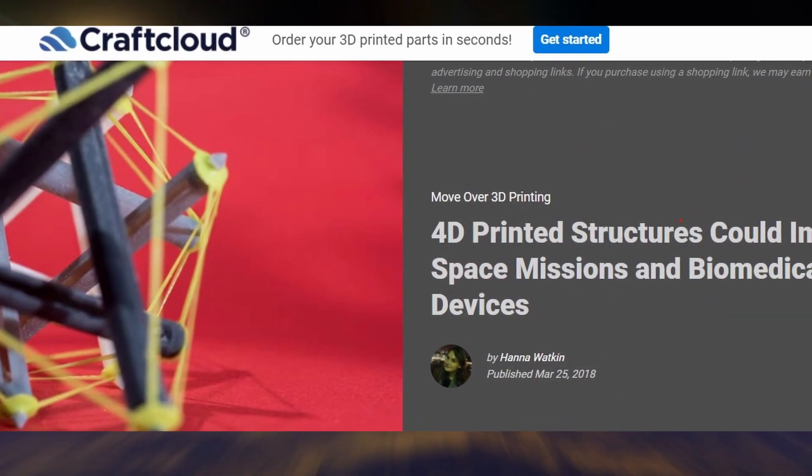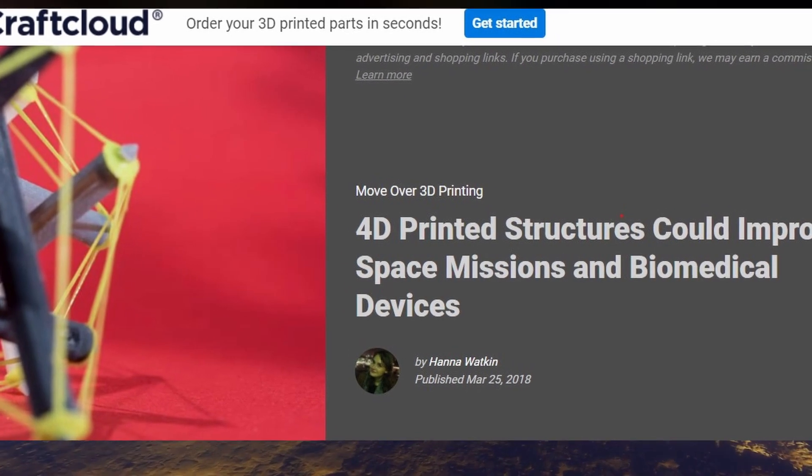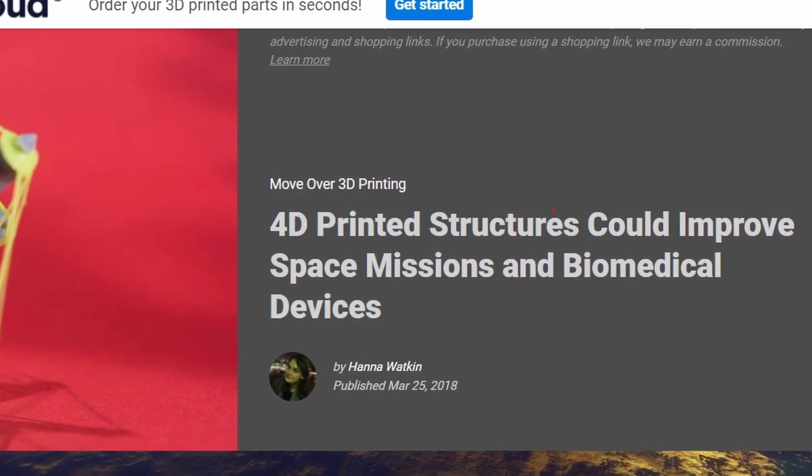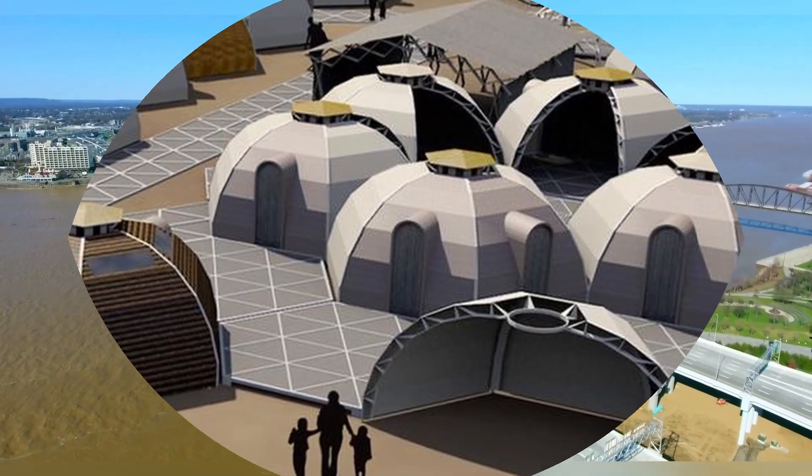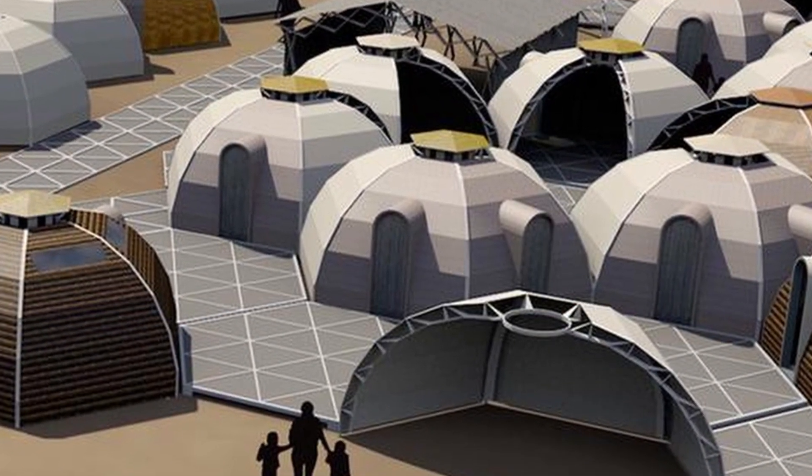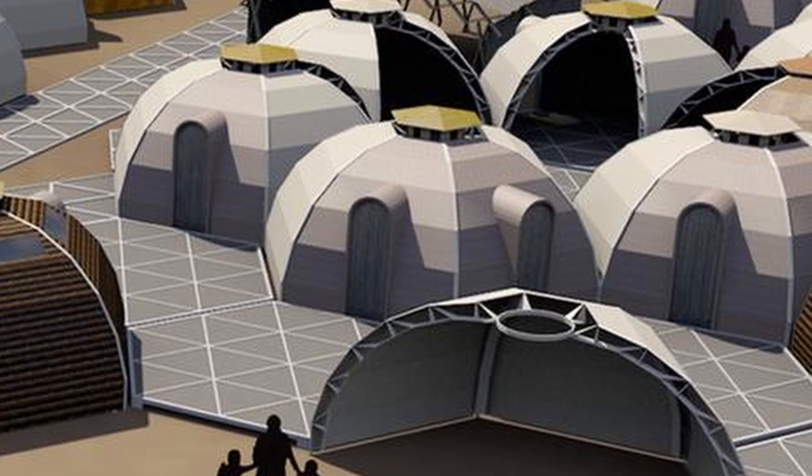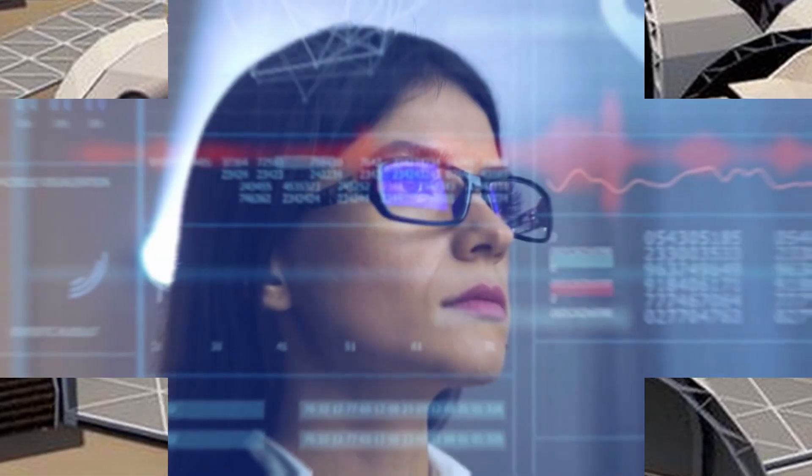So, instead of using 3D printed materials, 4D printed materials could be used to take advantage of their transformable shape. They could provide the solution to build bridges, shelters, or any kind of installations, as they would build up themselves or repair themselves in case of weather damage.